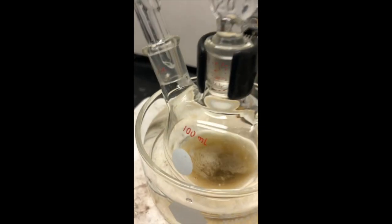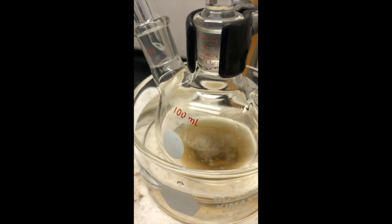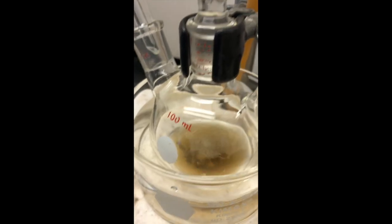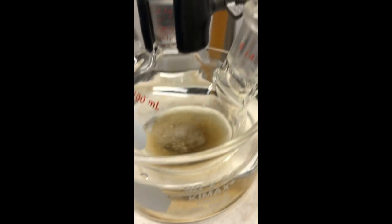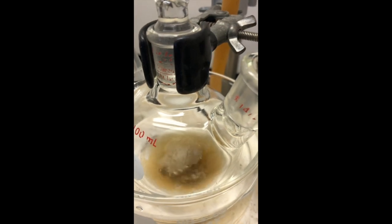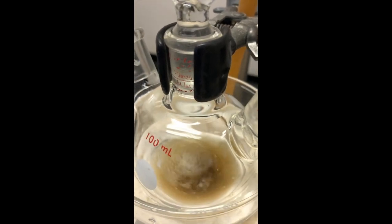For the first part of the formation of the Grignard, we've just lowered the reaction flask down and added a bunch more warm water to the crystallizing dish. And we're going to do an extended reflux period so that we can react as much of that magnesium as possible.